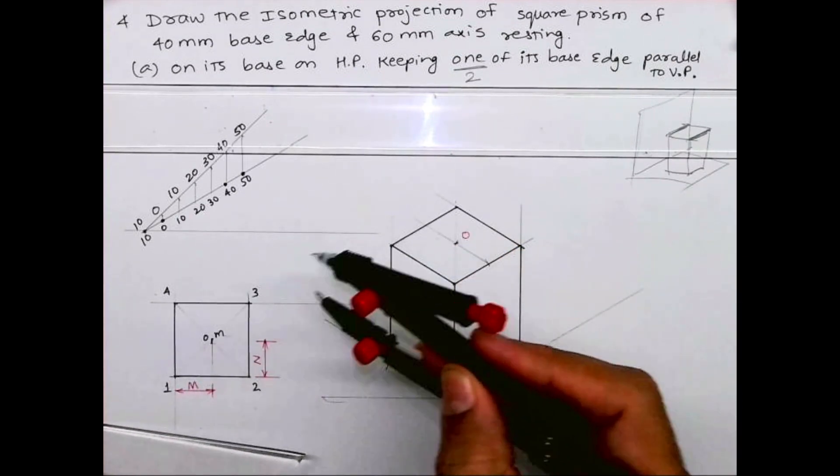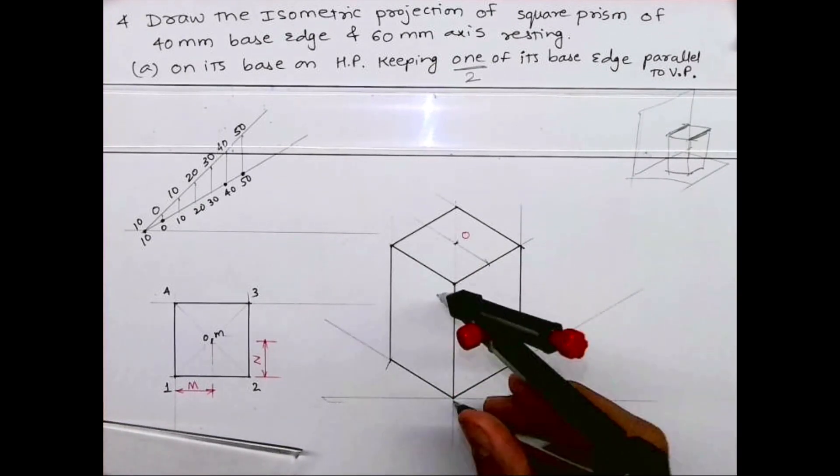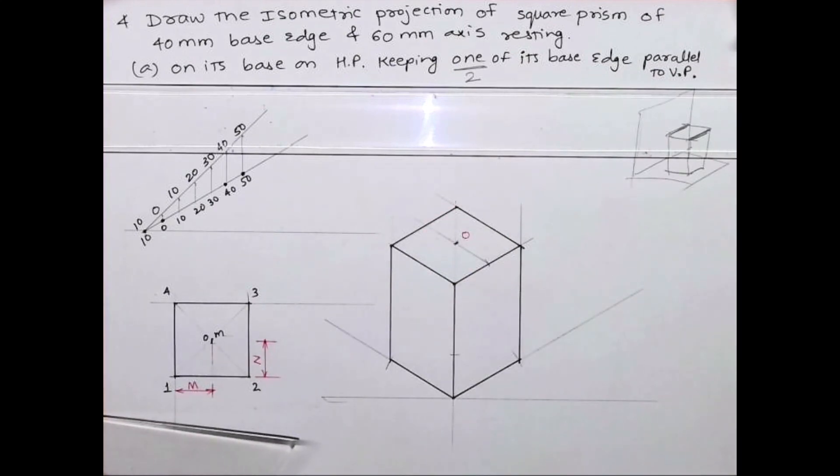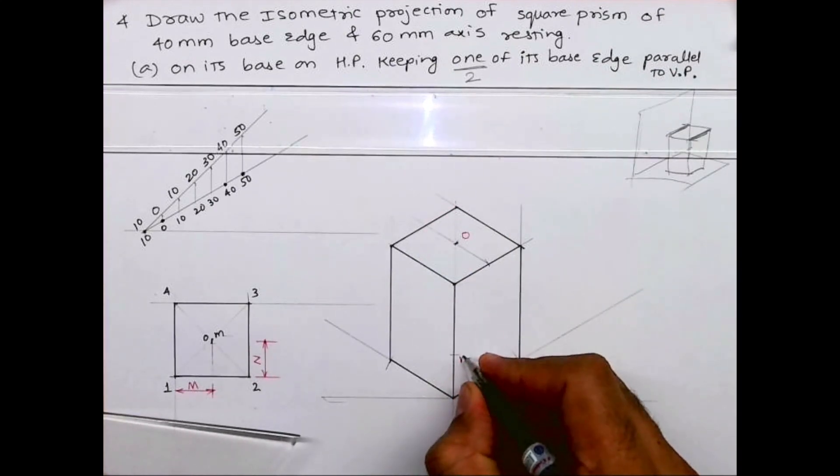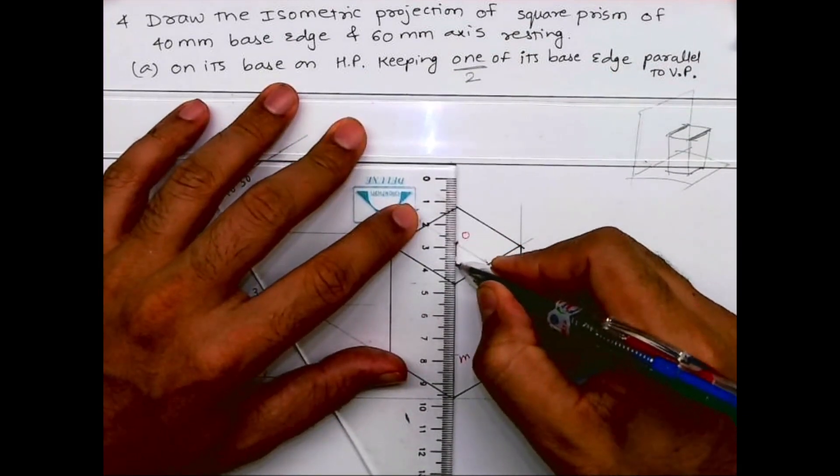Now we need to cut height down. So always remember, whenever you're taking distance, always take with the rounder in isometric projection because that will help you a lot. This is M, and O to M you can draw X.